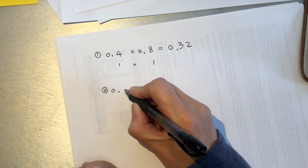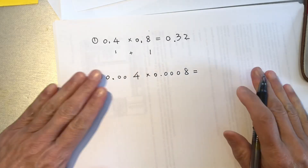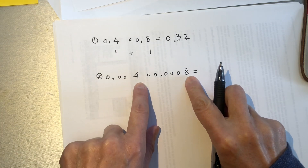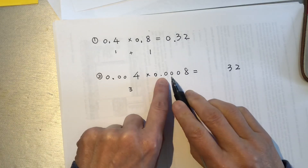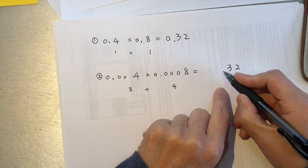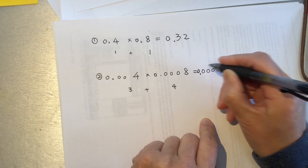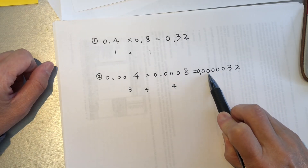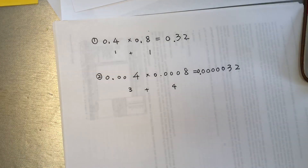Second example: 0.004 times 0.0008. It looks complicated — forget about everything. The real number is 4, the real number is 8. 4 times 8 is 32. Now count the decimal places: 1, 2, 3 in the first number, and 1, 2, 3, 4 in the second number — that's 7 total. So we place the decimal 7 places in: the result is 0.0000032. Can you believe it? Use your calculator — I know I'm right!